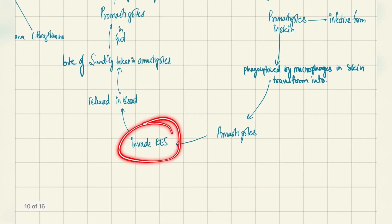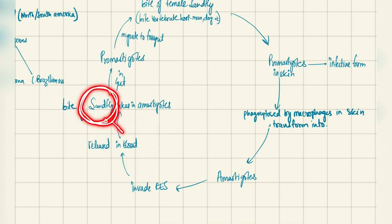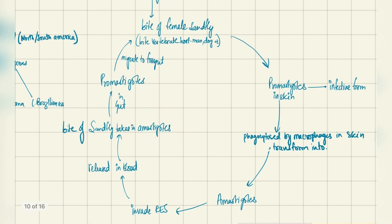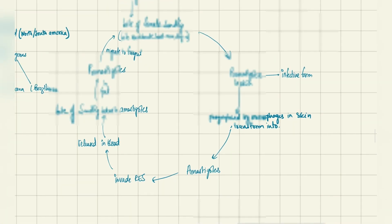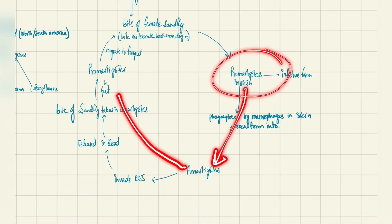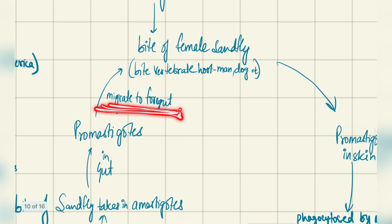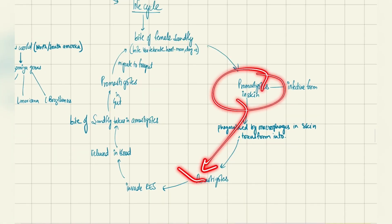After invading the reticuloendothelial system, amastigotes are released into the blood, where the sandfly takes another bite and ingests the amastigotes. Inside the gut of the sandfly, amastigotes are transformed back into promastigotes. They then migrate to the foregut and into the mouthparts used to bite the vertebrate host again. So the cycle is: promastigote → amastigote in humans, and amastigote → promastigote in the sandfly.